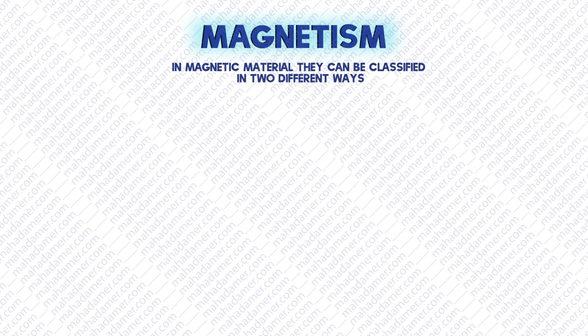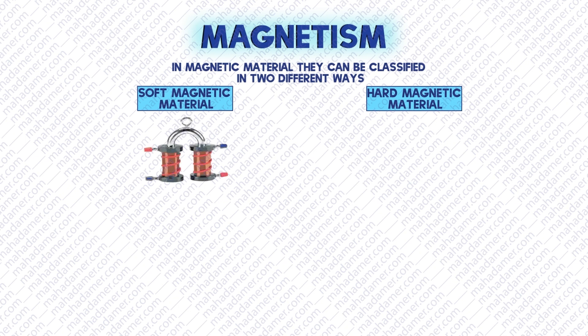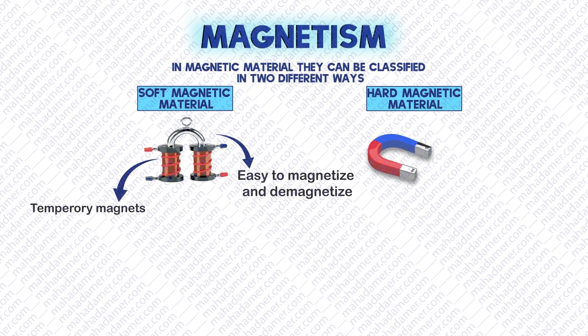Even these magnetic materials can be classified in two different ways. First are the soft magnetic materials and the second are the hard magnetic materials. In soft magnetic materials, they are easy to magnetize and demagnetize. They are temporary magnets. On the other hand, in hard magnetic materials, they are difficult to magnetize and demagnetize. They are permanent magnets.